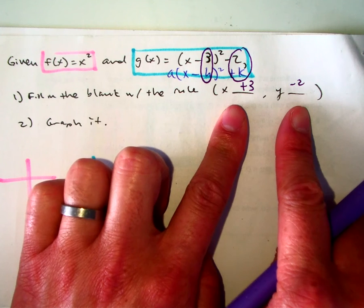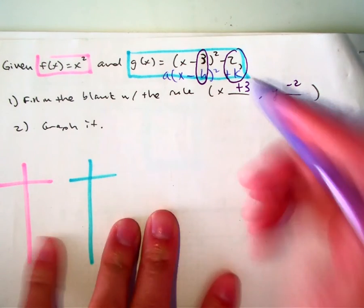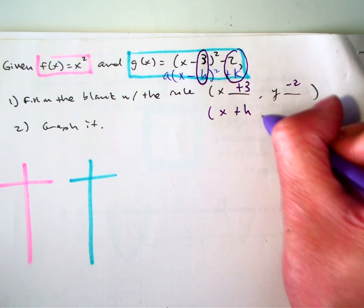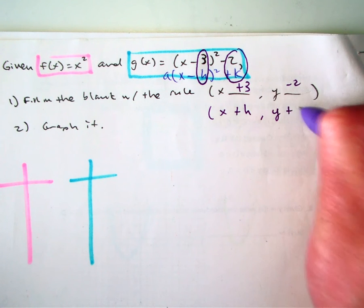That is correct. So if you need to add this on your formula sheet, the rule that you're creating is really this. That's x plus h, y plus k.